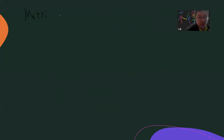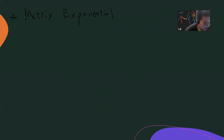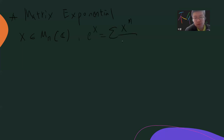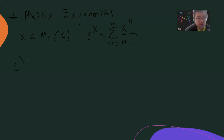The first video will be very simple. I want to review the matrix exponential, because this is the simplest starting point. The starting point is M_n(ℂ) — n-by-n matrices with complex coefficients — and we define exp(X) using the standard Taylor series expansion of the exponential, but now X is a complex n-by-n matrix.